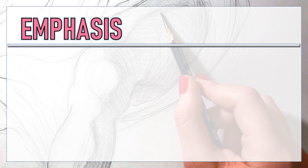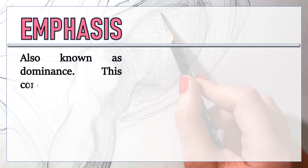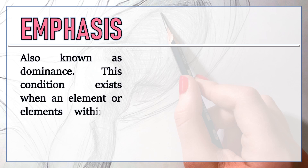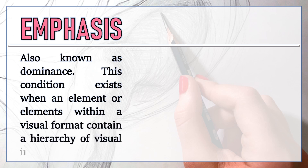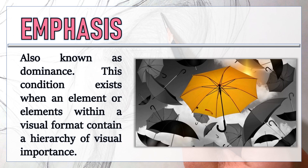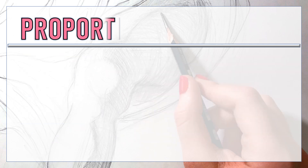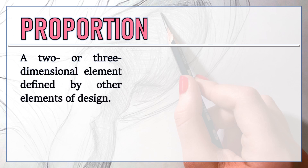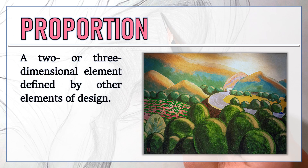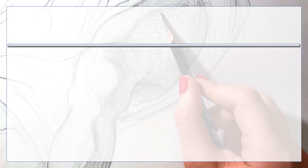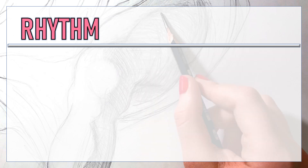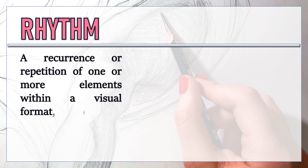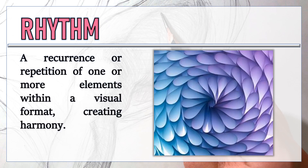Next is emphasis, also known as dominance. This condition exists when an element or elements within a visual format contain a hierarchy of visual importance. Another principle is proportion — a two- or three-dimensional element defined by other elements of design. Another significant principle is rhythm — a recurrence or repetition of one or more elements within a visual format, creating harmony.